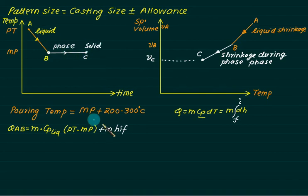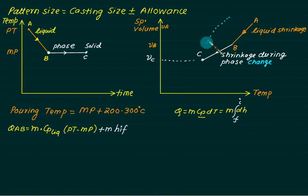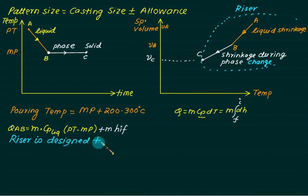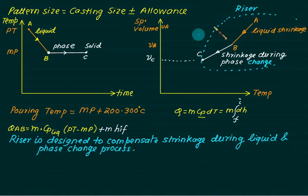From A to C, the total heat removed is the sum of sensible heat and latent heat. This compensation is done by the riser. The entire shrinkage — both liquid shrinkage and shrinkage due to phase change — is compensated by the riser. The riser is designed to compensate for shrinkage during the liquid phase and during the phase change process. So no pattern allowance is provided for the A to C region.